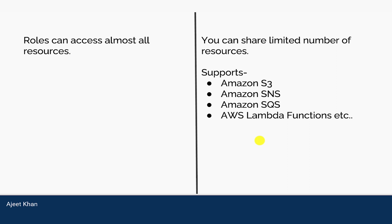Here's a scenario to differentiate the two: suppose you are in Account A and the S3 bucket is in Account B, and you want to put an object into that bucket. You have an existing role in Account A and a role in Account B. To access the S3 bucket you would need to assume the role in Account B, but that means giving up your role in Account A, which may have access to MySQL in RDS. The drawback of role-based policy is that you must give up your existing policy when assuming a role on another account. To fix this, you can use a resource-based policy — a bucket policy in Account B — that allows the specific user in Account A to access the S3 bucket without giving up their original IAM role.